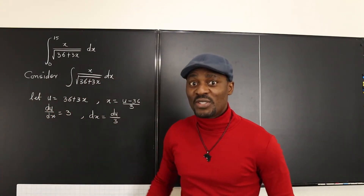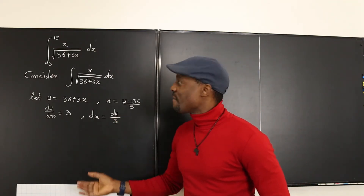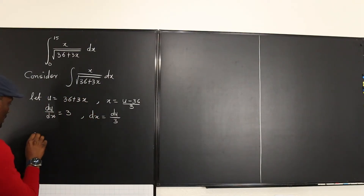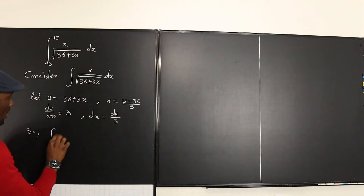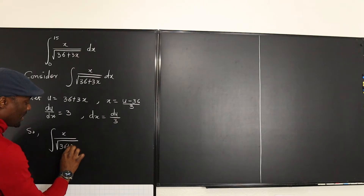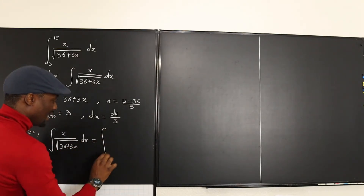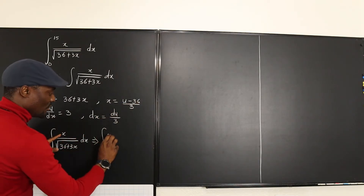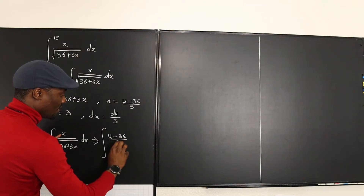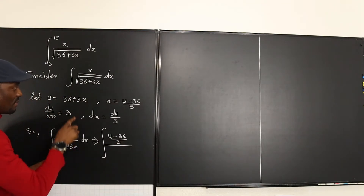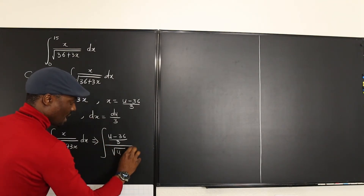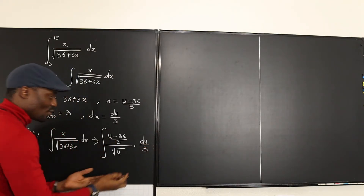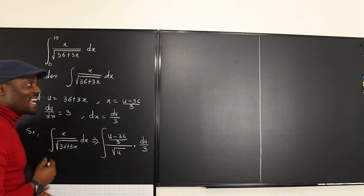This is the preparation stage — if you get this right, you're good. Now we perform the transformation: the integral of x over square root of 36 plus 3x dx becomes the integral of (u minus 36)/3 divided by the square root of u, times du over 3.